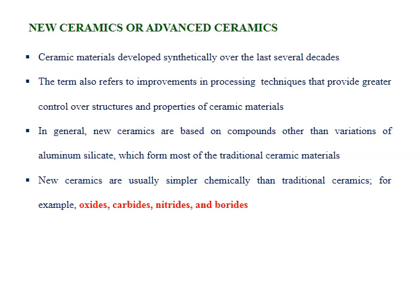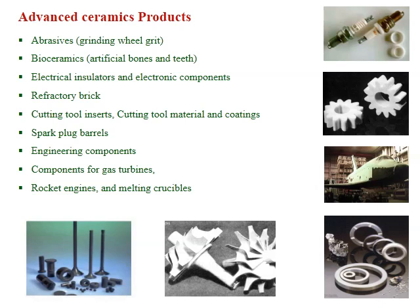The next category is new ceramics or advanced ceramics. These are a class of ceramics developed synthetically over the last seven decades. The term also refers to improvements in processing techniques that provide greater control over the structure and properties of ceramic materials. New ceramics are based on compounds other than variations of aluminium silicate, which forms most traditional ceramics. New ceramics are usually simpler chemically — for example, they are oxides, carbides, nitrides, and borides — and show better and improved characteristics compared to traditional ceramics.